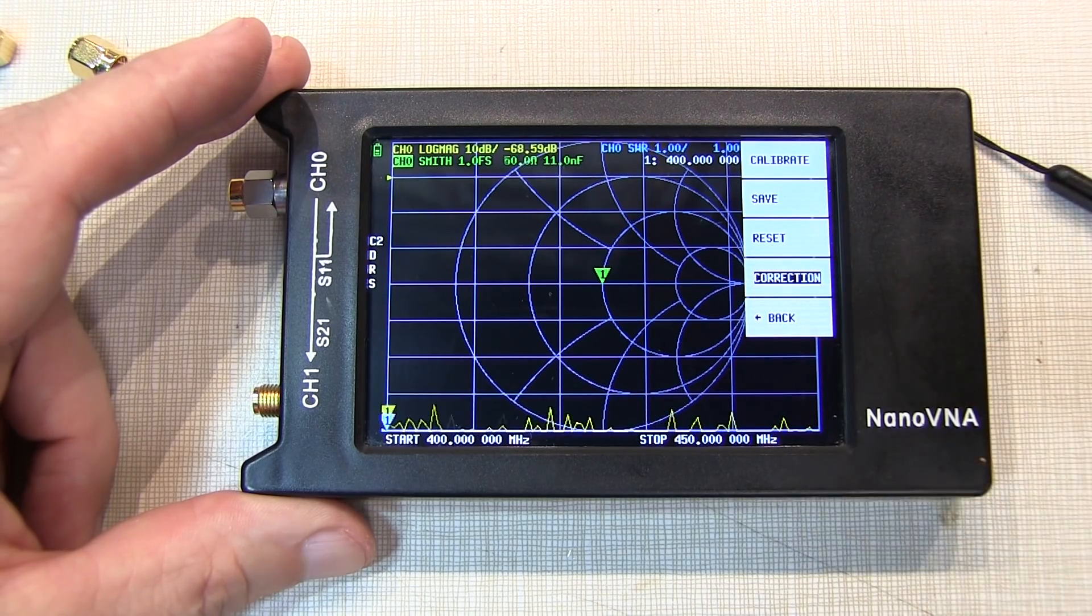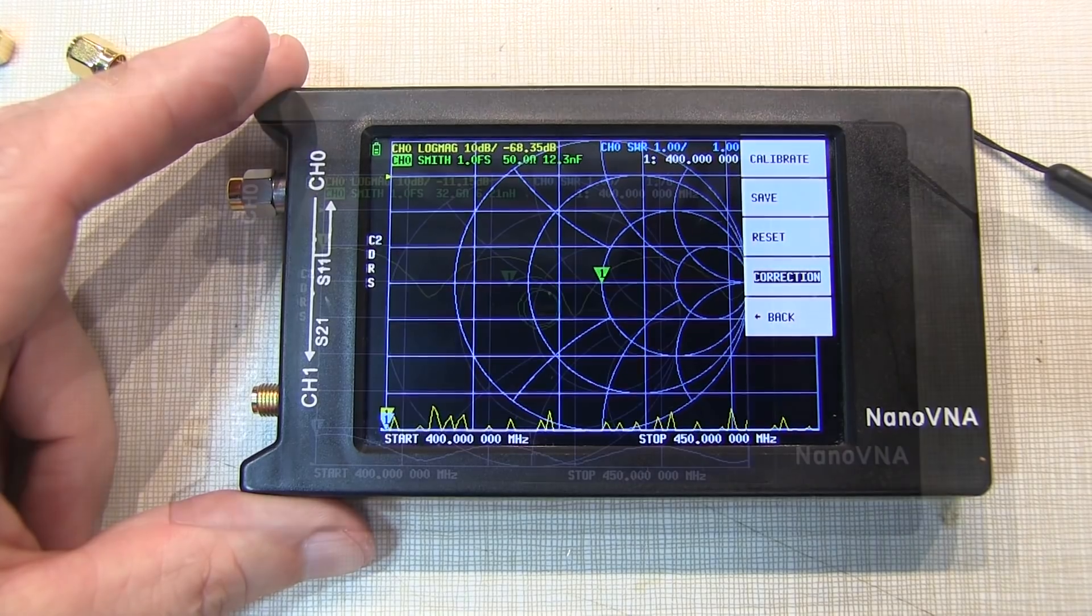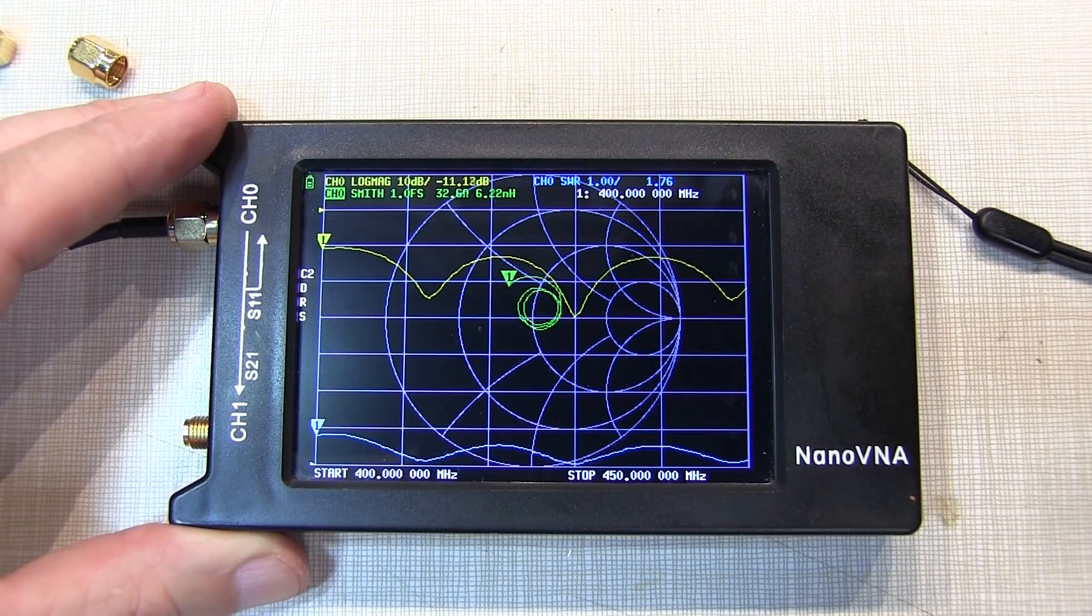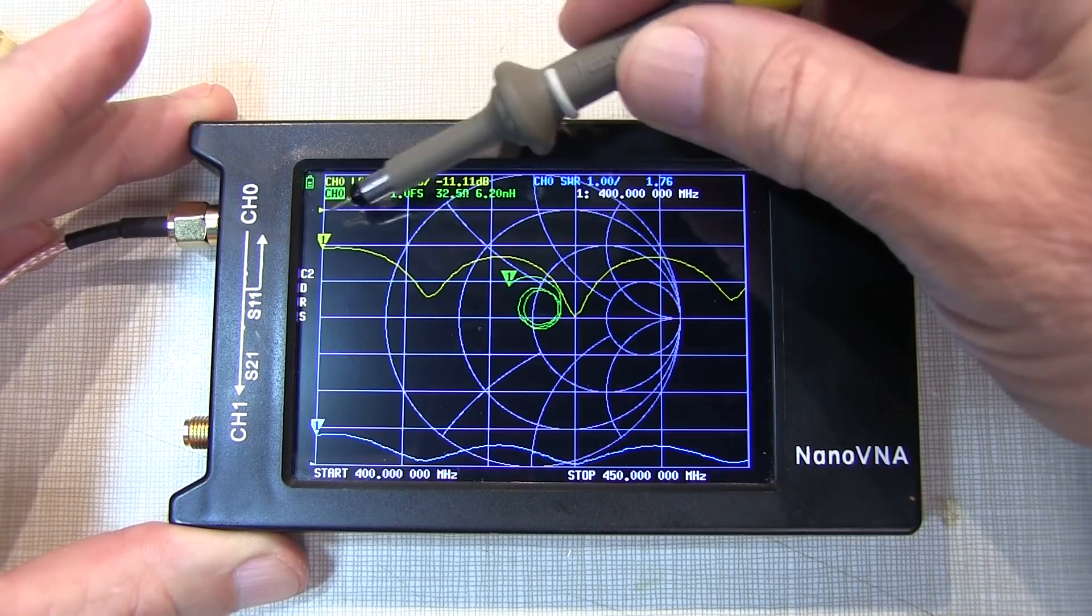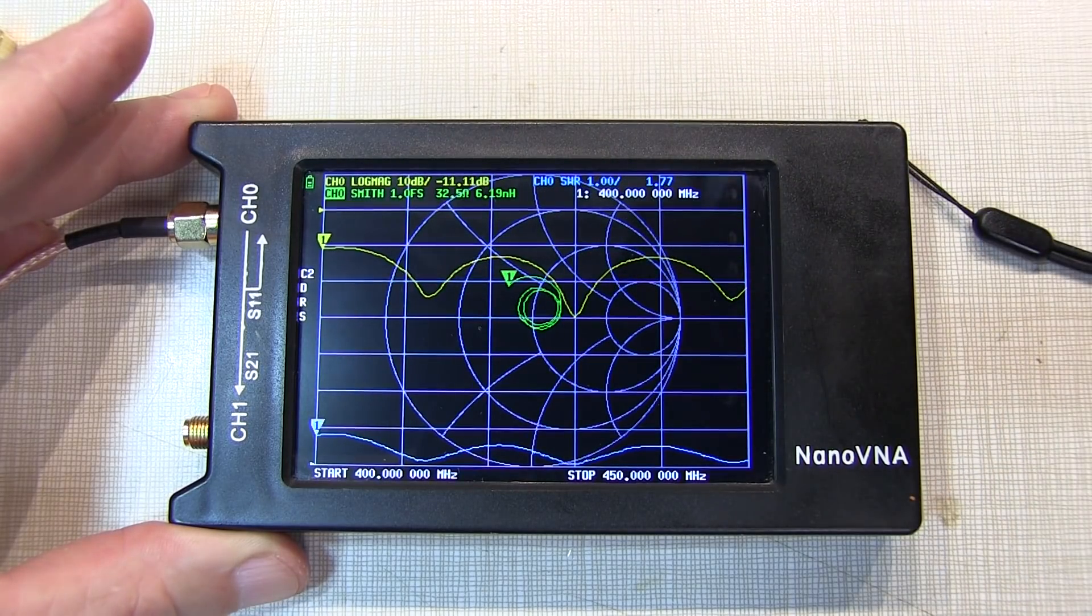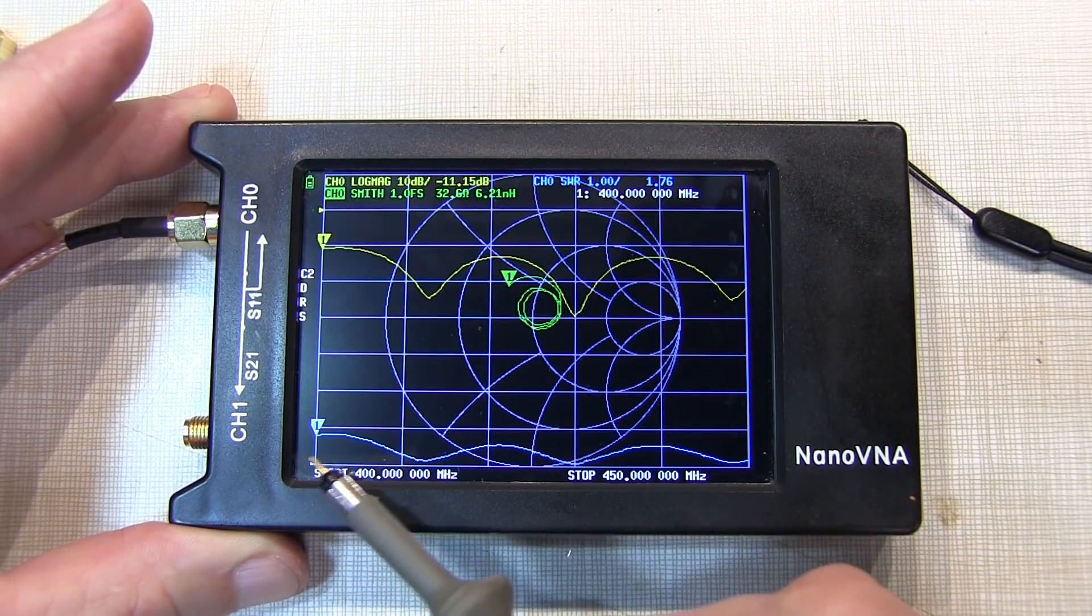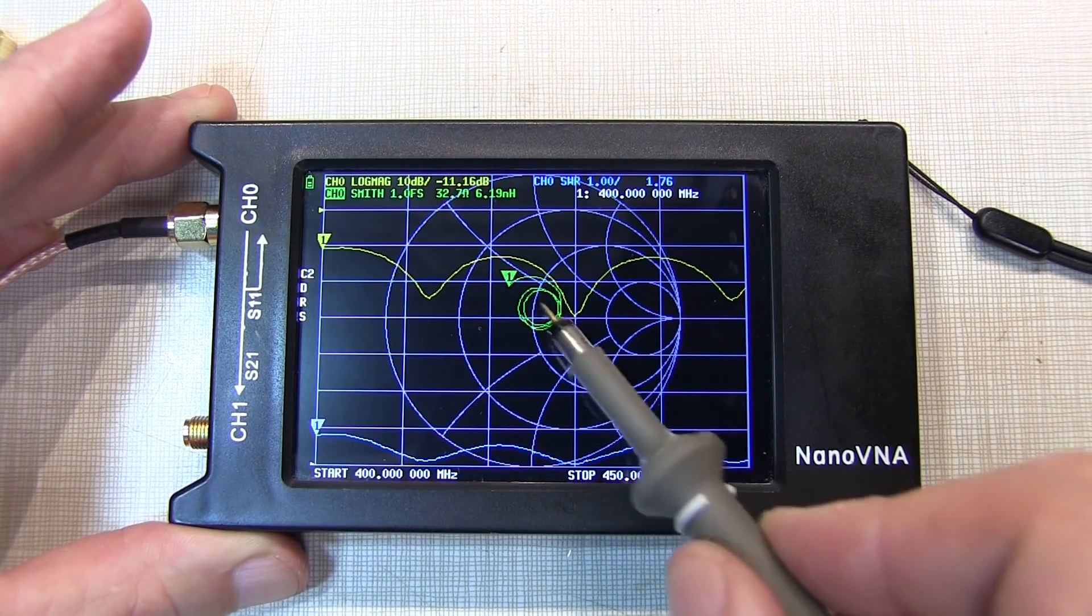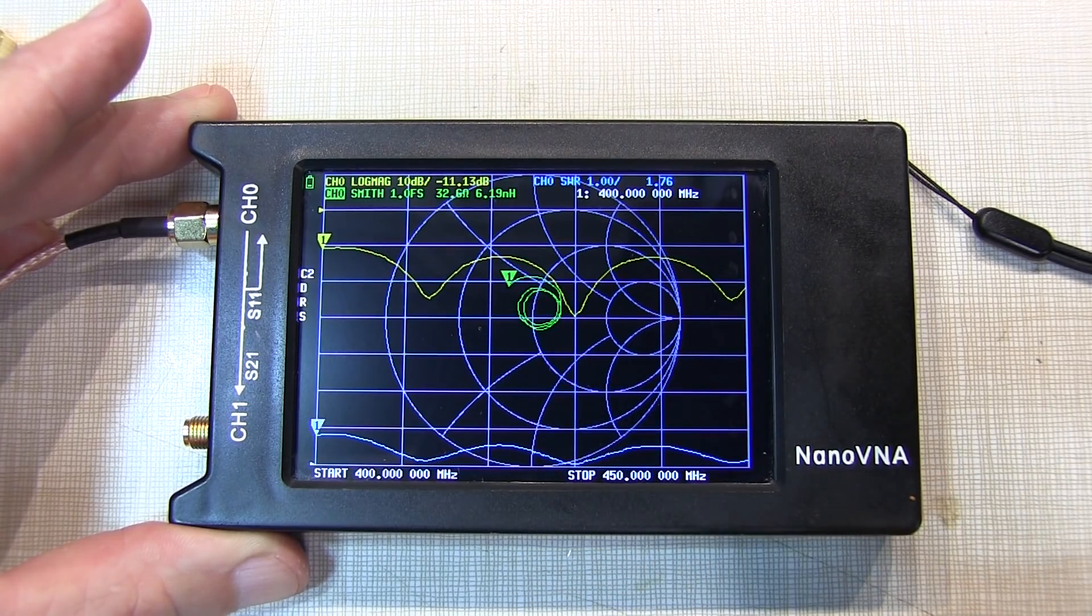So now we're ready to do our measurement on our antenna. Our UHF antenna is now hooked up, and we can actually see the reflection coefficient, our S11 plot of the antenna, and we can see our SWR plot of the antenna, and the complex impedance shown on the Smith chart.